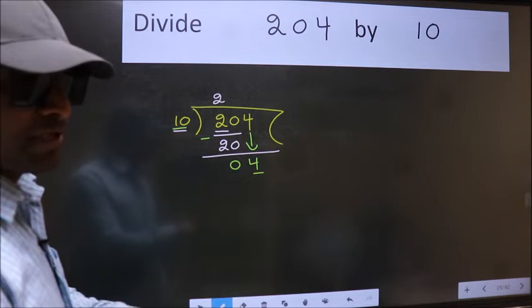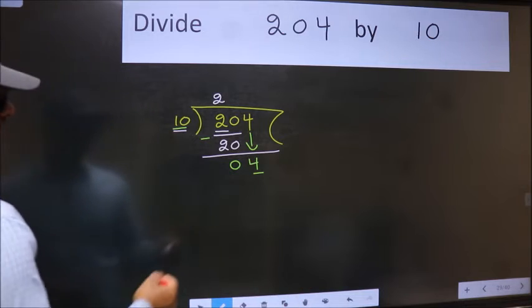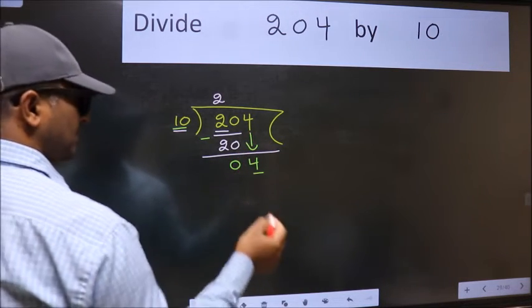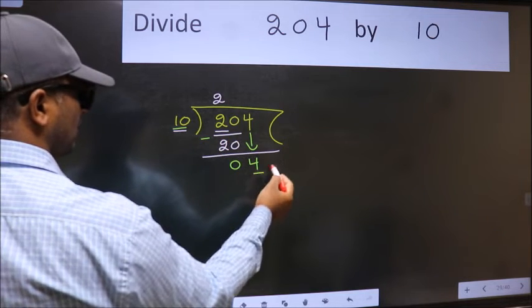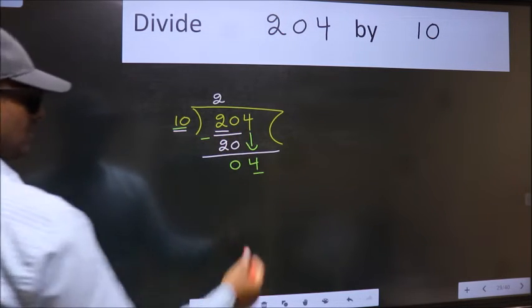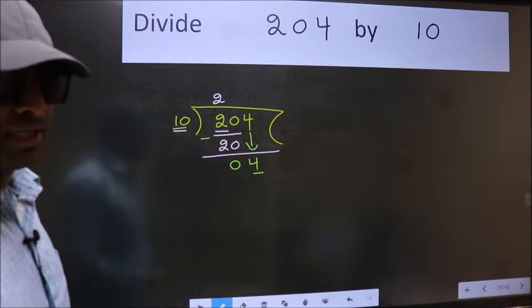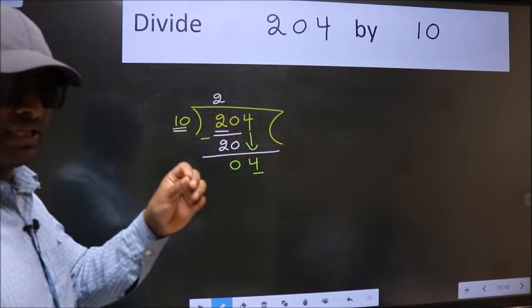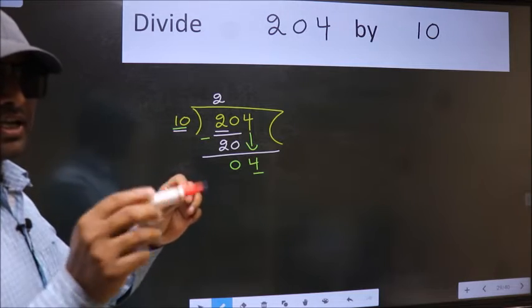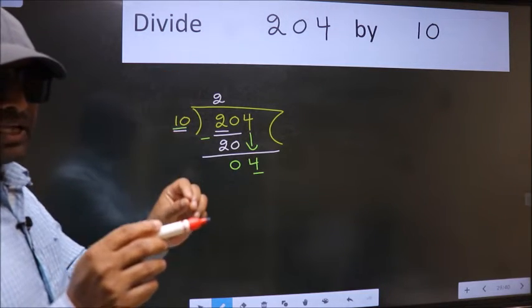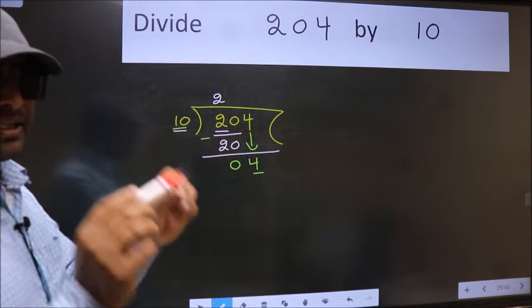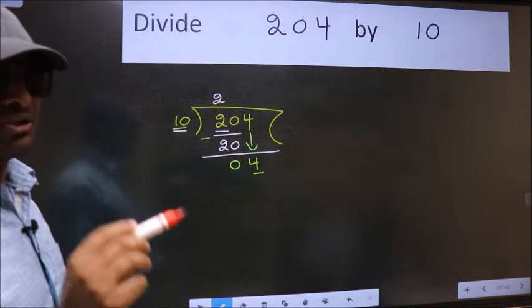Why is it wrong? Because just now you brought this number down. And in the same step, you want to put dot, take 0, which is wrong. I repeat. Bring down the number and also put dot, take 0. Both at the same step, you should not do.